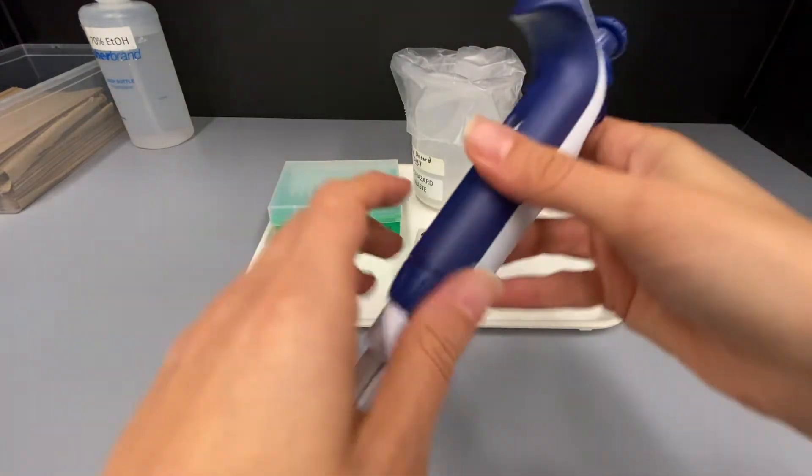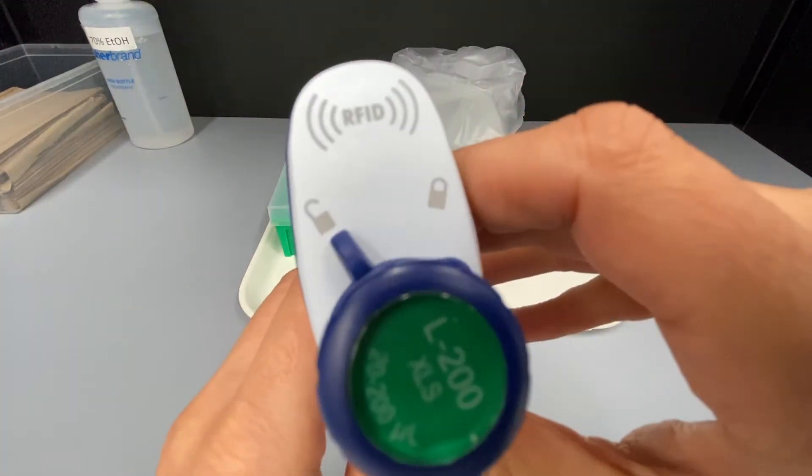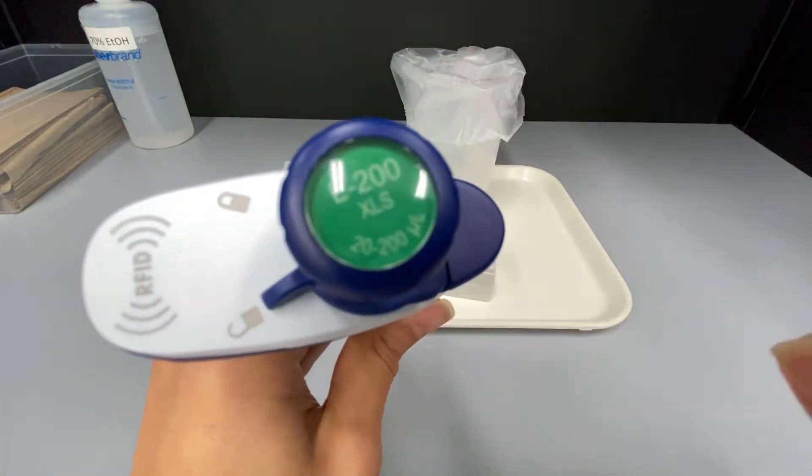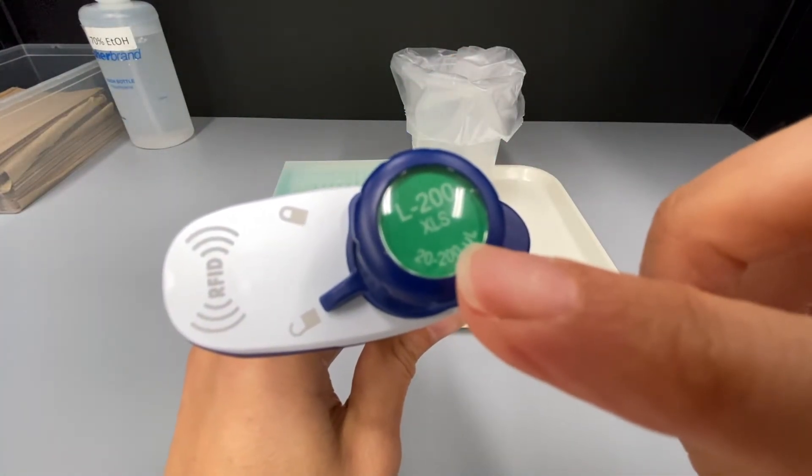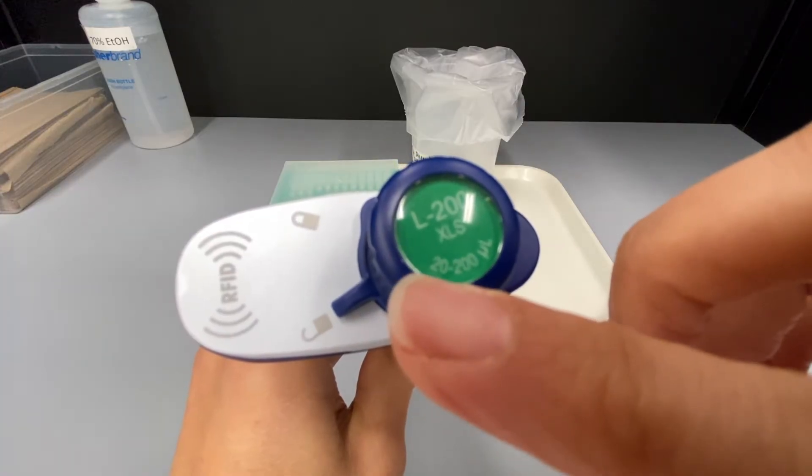This is a P200. The 200 refers to the maximum volume of solution that the micropipette can transfer. There is also a minimum volume associated with the pipettes. For the P200, it's 20 microliters.